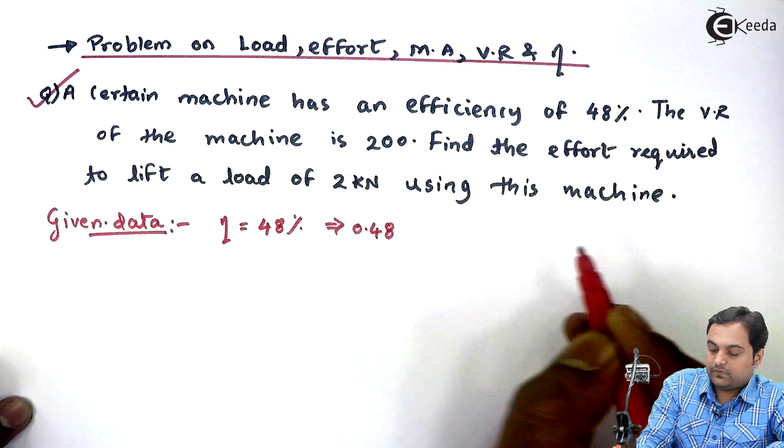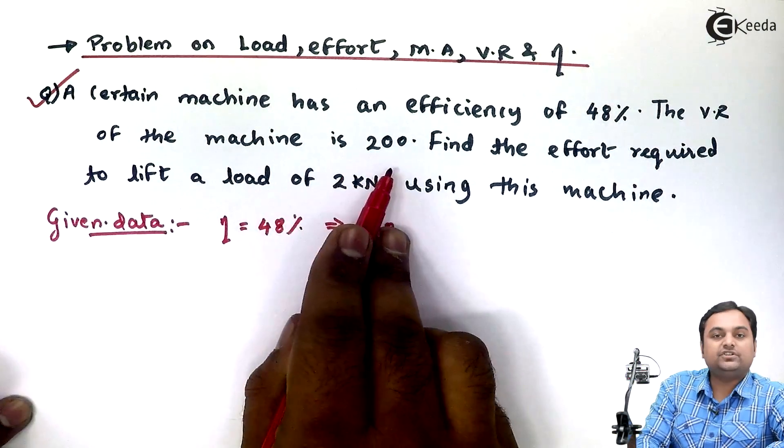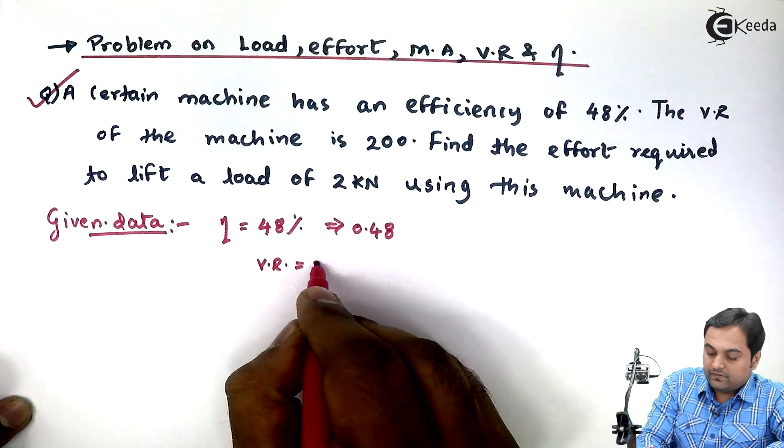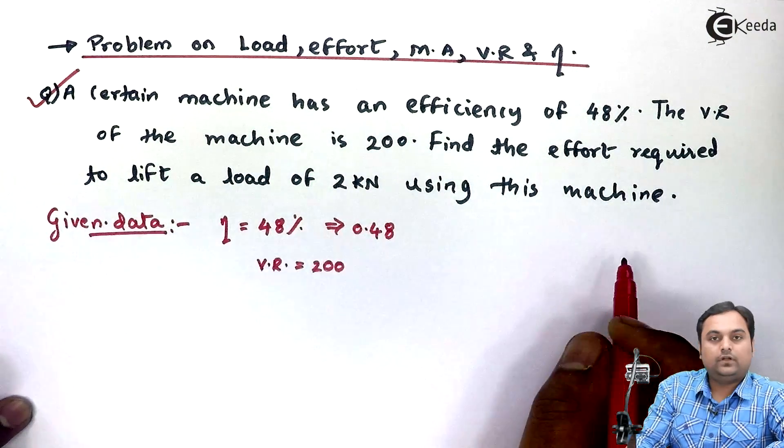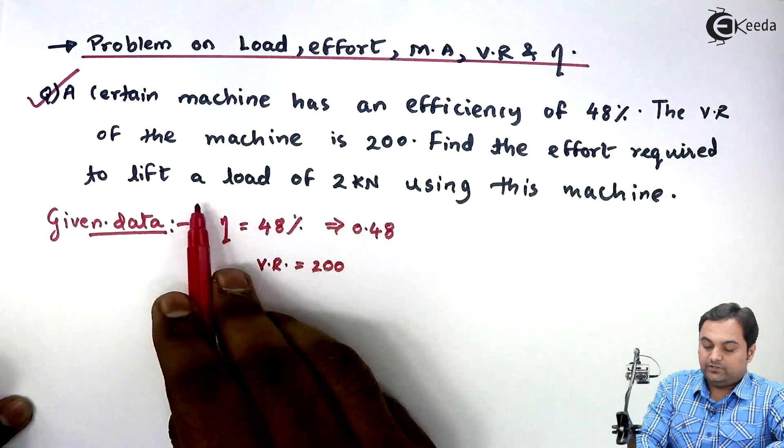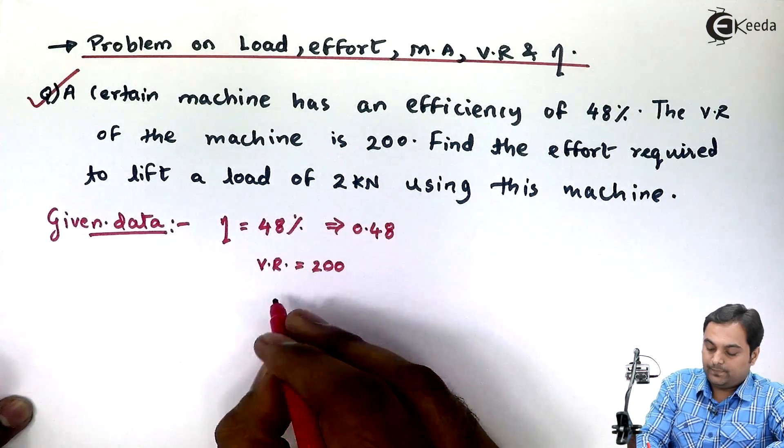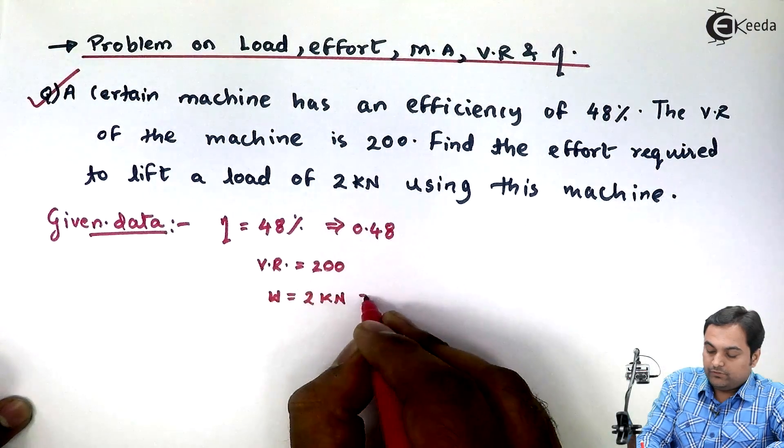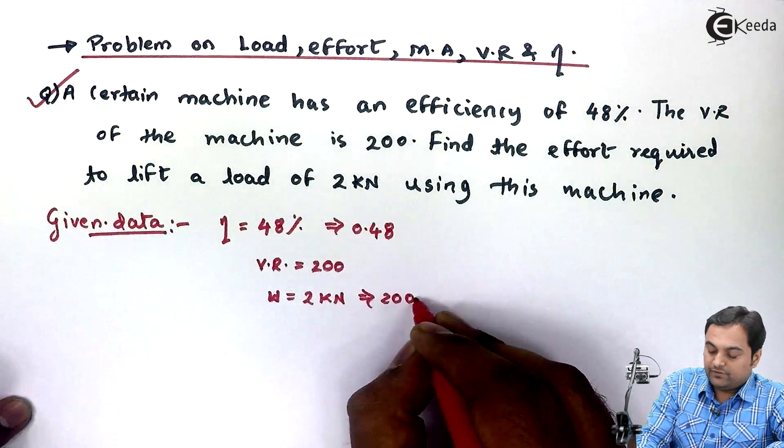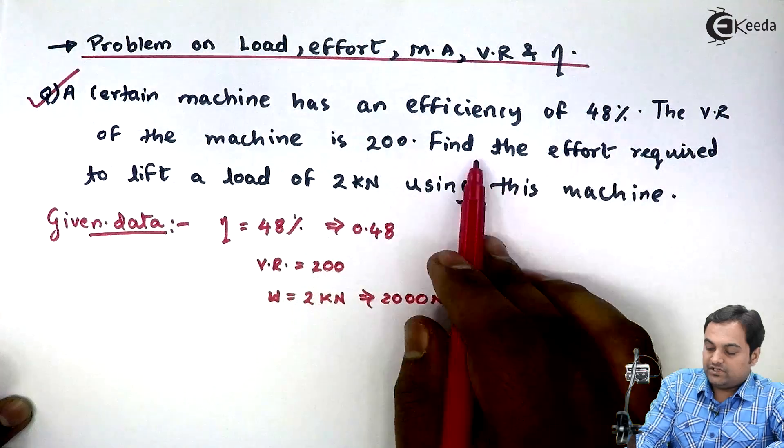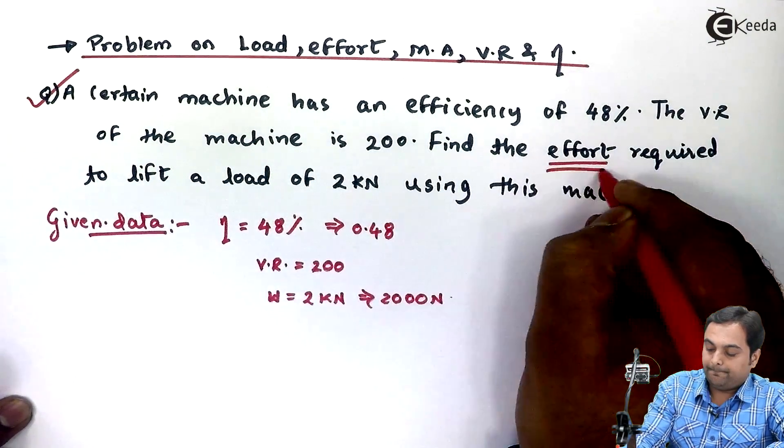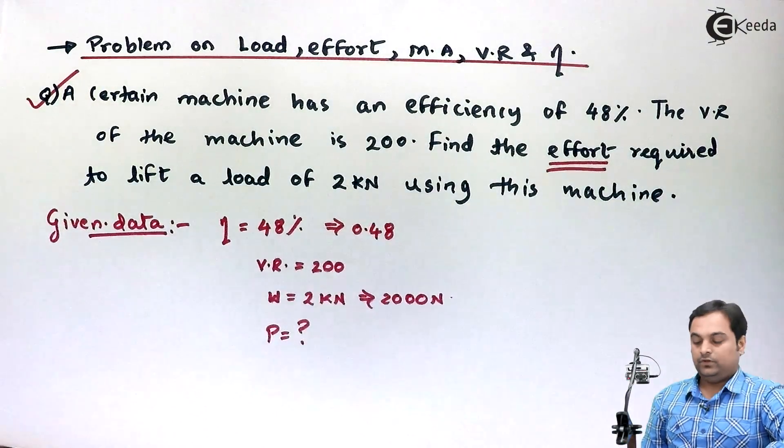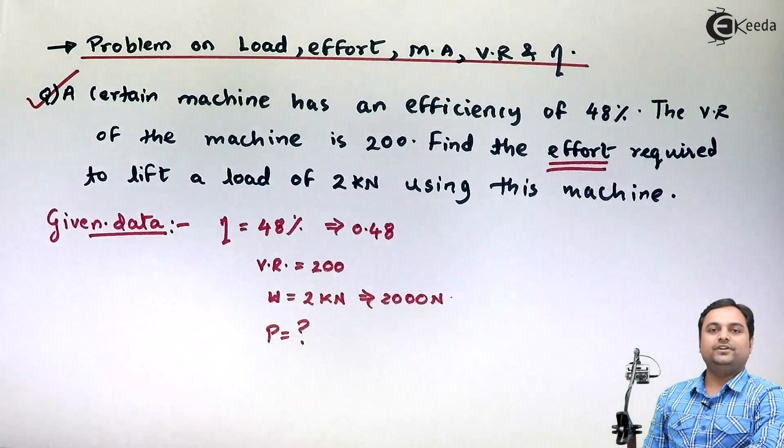The velocity ratio of the machine is 200, so VR equals 200. Find the effort required to lift a load of 2 kilonewtons. W is given as 2 kilonewtons, which means it is 2000 Newtons. The question is to find the effort, which is indicated by letter P.